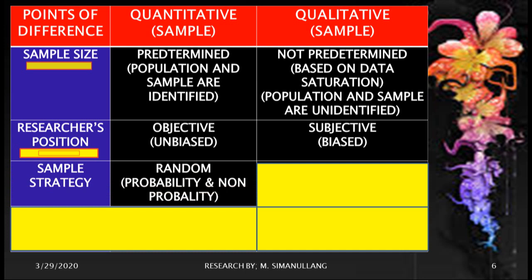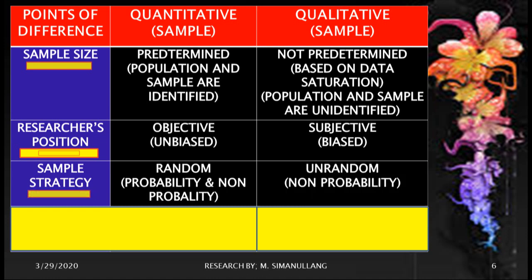Regarding the strategies used in choosing the sample: in quantitative research it is done by random selection — by probability and sometimes by non-probability methods. While for qualitative research it can only be done by non-probability methods or strategies. This will be discussed in specific videos dealing with probability and non-probability sampling methods.